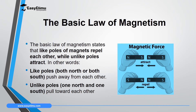One of the most important laws in science, after the law of conservation of energy, is the basic law of magnetism, which states that like poles of a magnet repel each other, while unlike poles of a magnet attract.